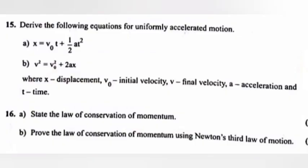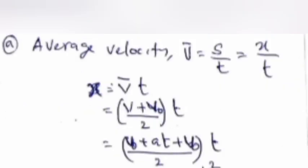Question 15: Derive the following equations for uniformly accelerated motion. A: x equals v₀t plus half at². B: v² equals v₀² plus 2ax. Answer: A, average velocity equals s by t equals x by t. x equals v into t equals (v plus v₀)/2 into t equals (v₀ plus at plus v₀) divided by 2 into t.